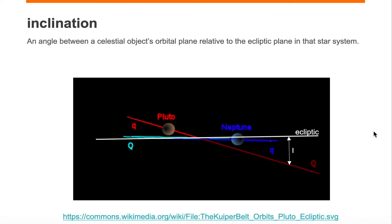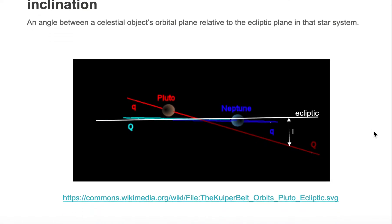we're looking at two orbits of objects in our solar system: the planet Neptune in its orbit and the dwarf planet Pluto in its orbit.